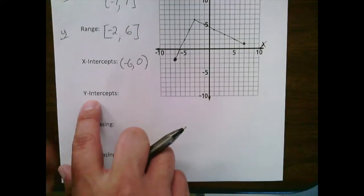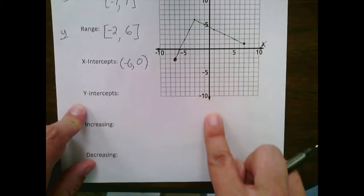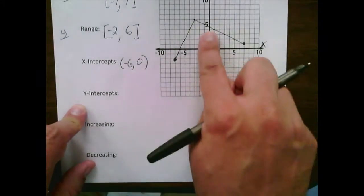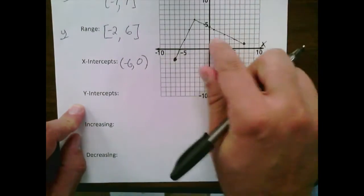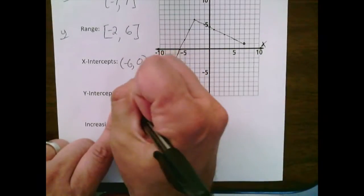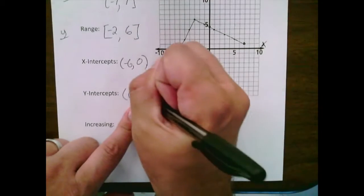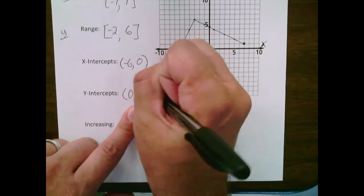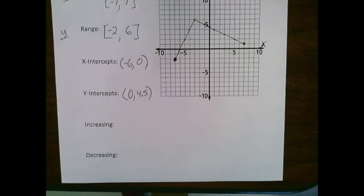For the y-intercept, we find where the graph crosses the y-axis. That happens at the point where x is 0 and y is about 4.5, so (0, 4.5) is the y-intercept.